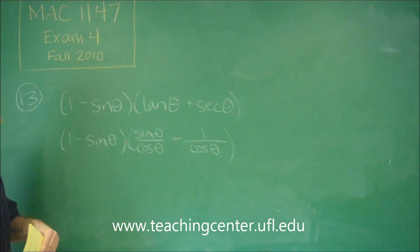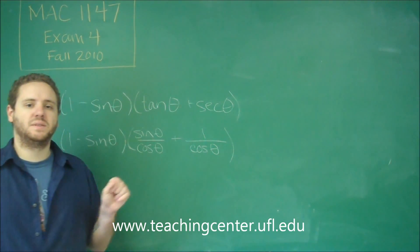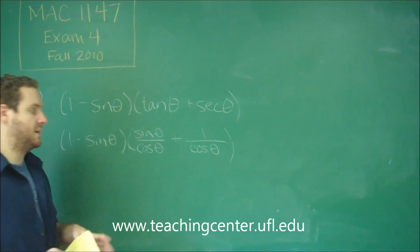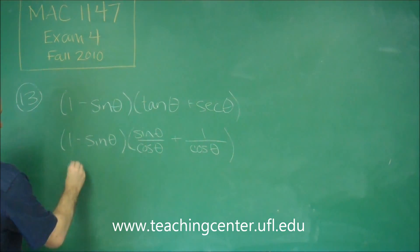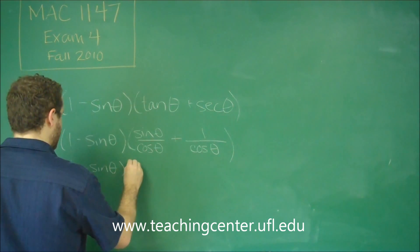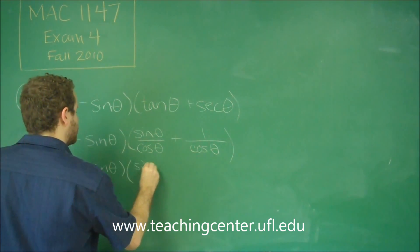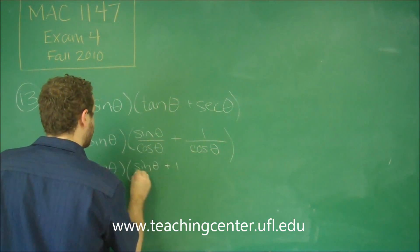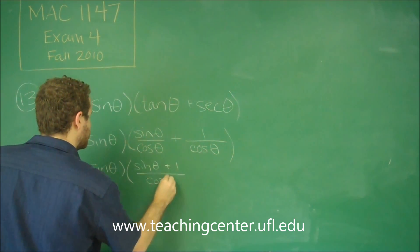So you can see by writing it like that, we've actually discovered that these have the same common denominator and can be added. So we have 1 minus sine theta. Now over here, we have sine theta plus 1, all over cosine theta.